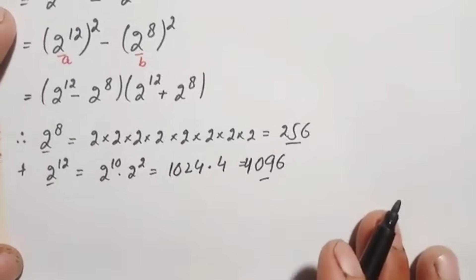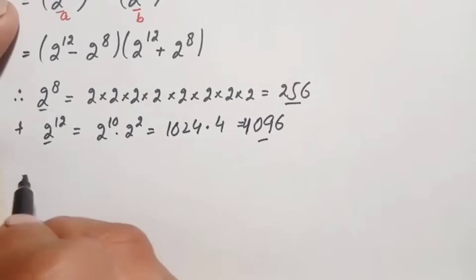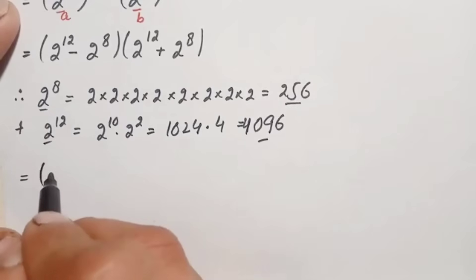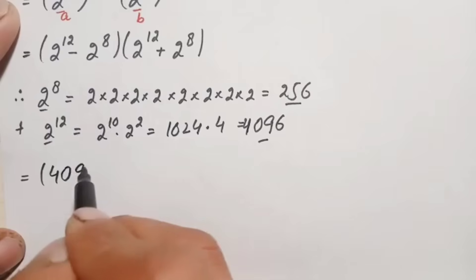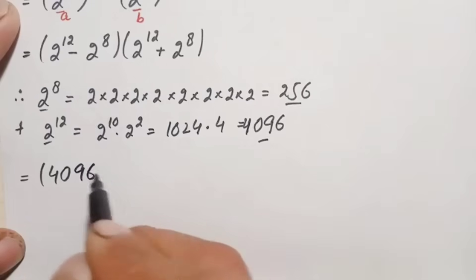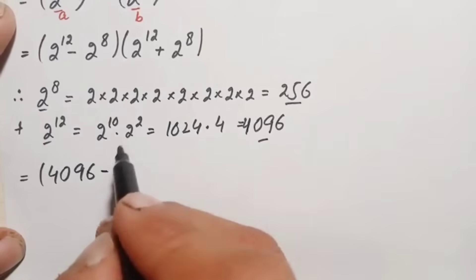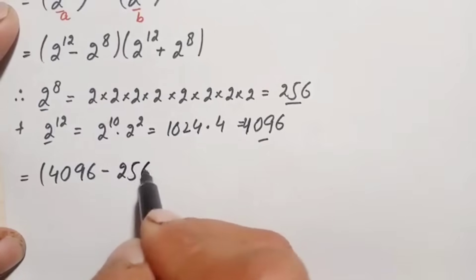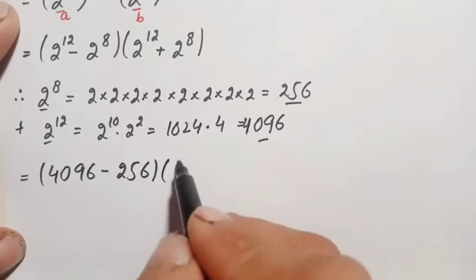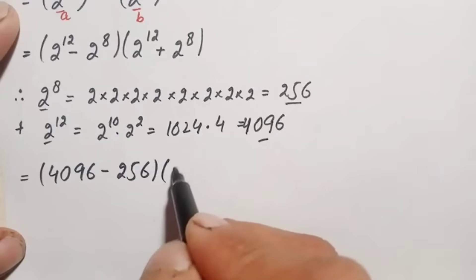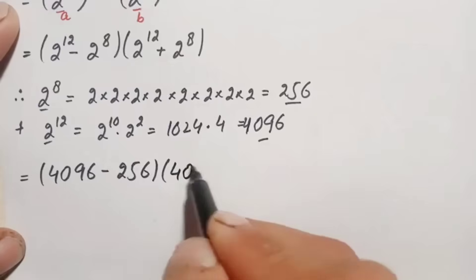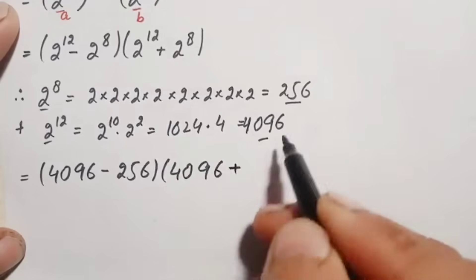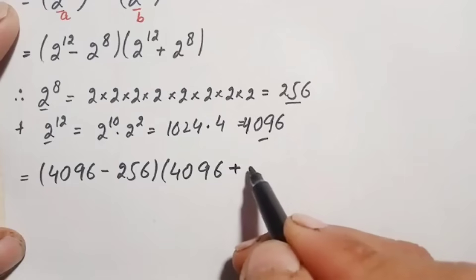We replace the two numbers in the equation with these values: (4096 − 256)(4096 + 256).